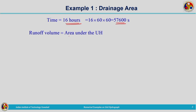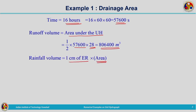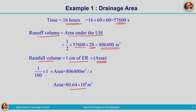The runoff volume equals the area under the triangular unit hydrograph. Using the formula for the area of a triangle: half times base times height, with time base 57,600 seconds and peak 28 meter cube per second. Setting the rainfall volume — 1 centimeter of effective rainfall multiplied by area — equal to the runoff volume and solving, the drainage area comes out to 80.64 × 10⁶ m², which is equivalent to 80.64 km².